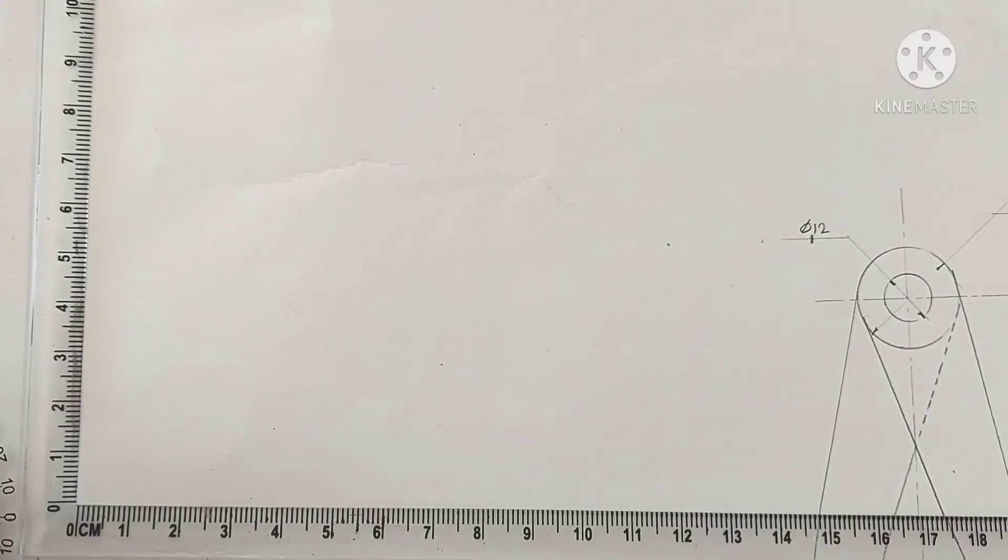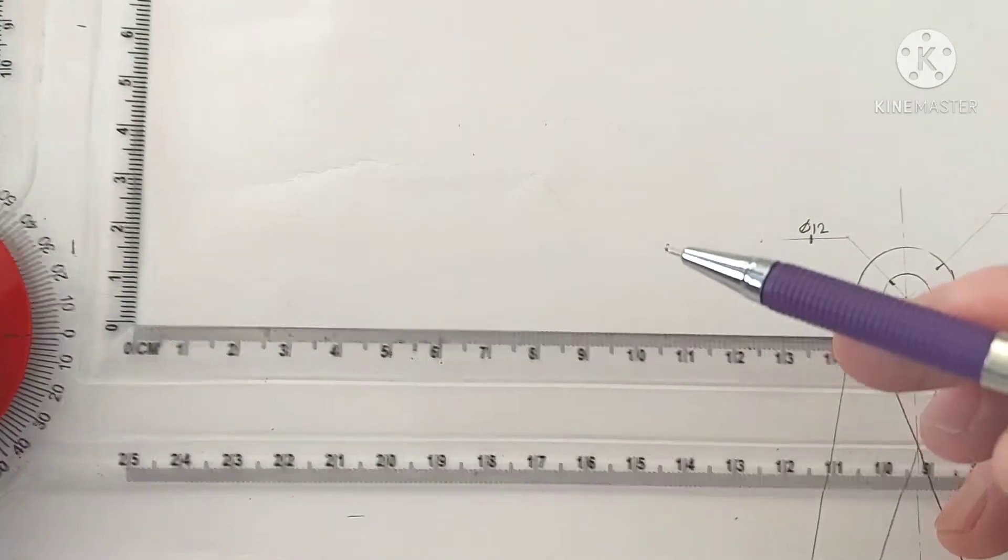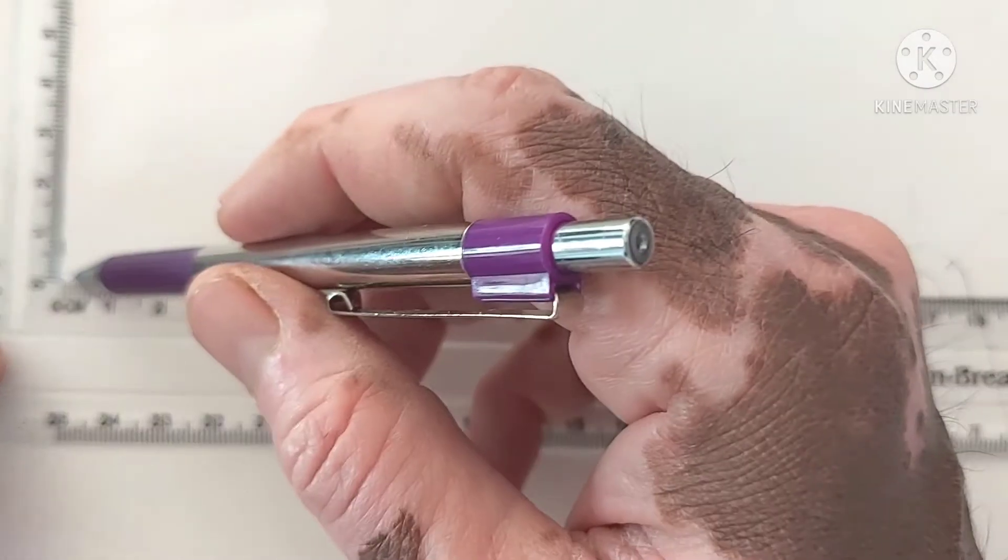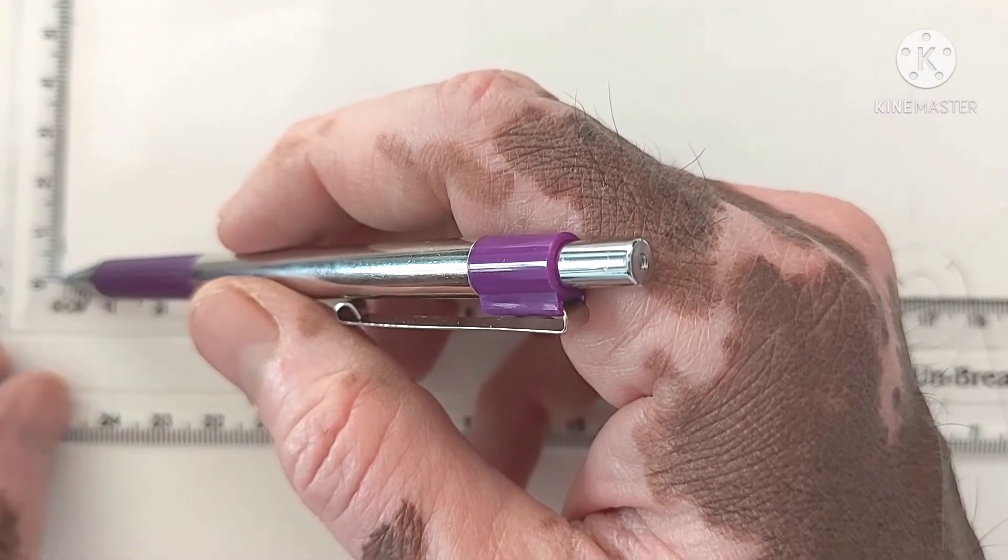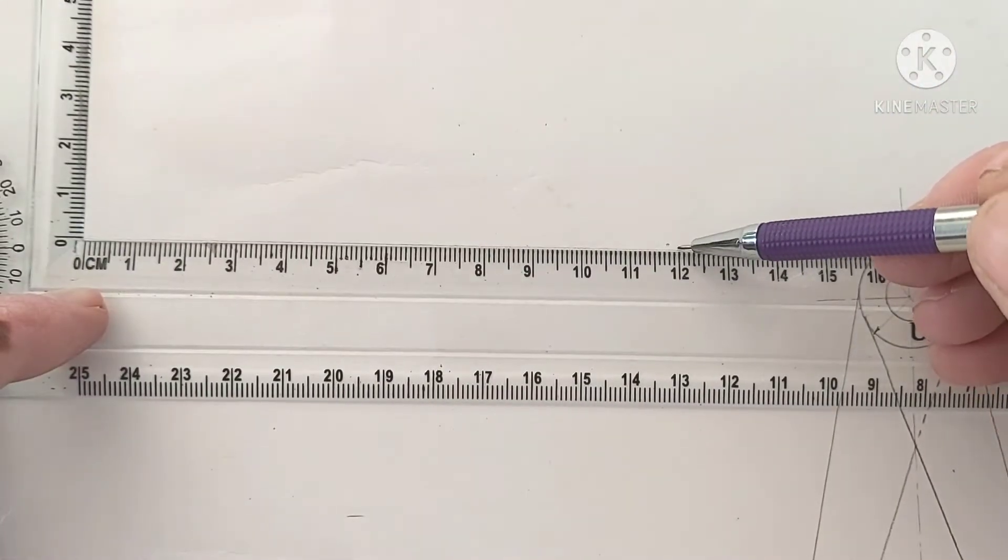We will see what is concentric circle method. According to question, the major axis is 120 mm. This 120 mm axis from here, 120 millimeter. Find out the midpoint that is 60.